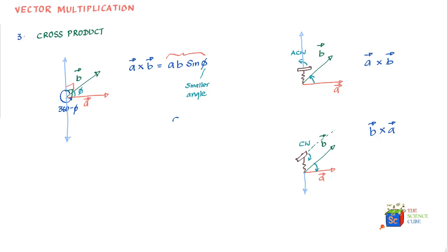You would notice that a cross b is not equal to b cross a — the cross product does not follow the commutative property. This is unlike the dot product, where a dot b equals b dot a and commutative law does hold.